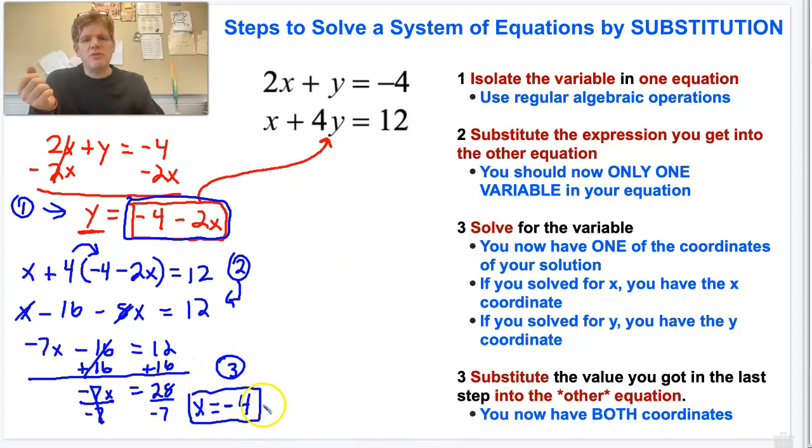Now I'm going to substitute this value, right? The step that I got here. I'm going to substitute that into the other equation. So I just used this one. Now I'm going to use this one. So I'm going to take my x is equal to negative 4 and I'm going to plug that in to this equation. So 2 times x and x is negative 4 plus y is equal to negative 4.